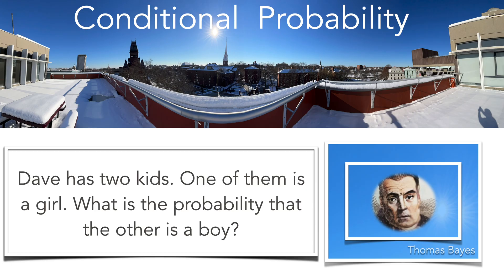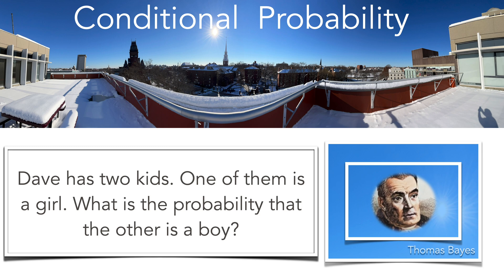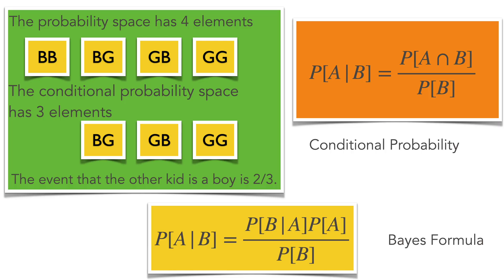The second story is about conditional probability. To illustrate this, I'm using an example which is older than the Monty Hall problem: Dave has two kids, one of them is a girl. What is the probability that the other is a boy? Intuitively you might say one-half, but conditional probability tells you otherwise. You have a probability space of four elements — boy-boy, boy-girl, girl-boy, girl-girl — each with the same probability. The conditional probability space reduces to three elements given that one kid is a girl. There are two cases with a boy, so the answer is two-thirds.